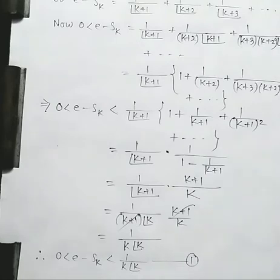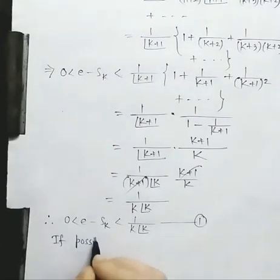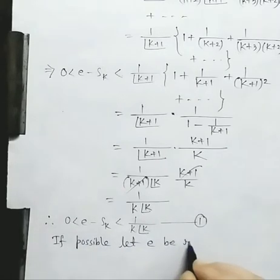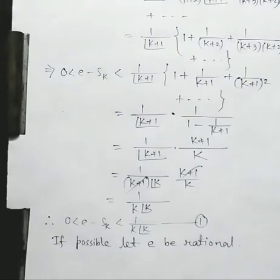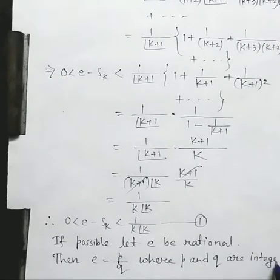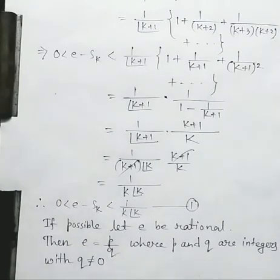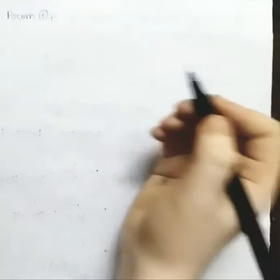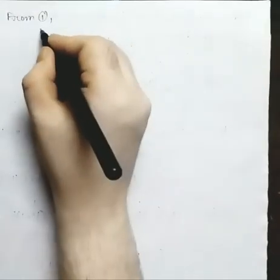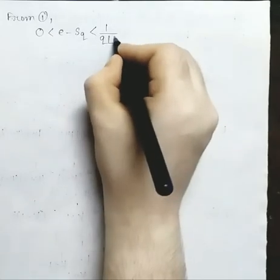We have to prove that e is irrational. If possible, let e be rational. Then we can write e equal to p by q, where p and q are integers with q non-zero. From inequality (1), replacing k by q, we have 0 less than e minus S_q less than 1 by q into factorial of q.